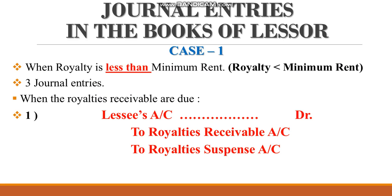In today's video, I am going to talk about journal entries in the books of the lessor. As you all know, in royalty account there are two parties. One is the lessee — the user of the asset. The second one is the lessor — the owner of the asset, also called the landlord. When the landlord gives his asset to the lessee, there are some entries which you need to pass in the books of the lessor.